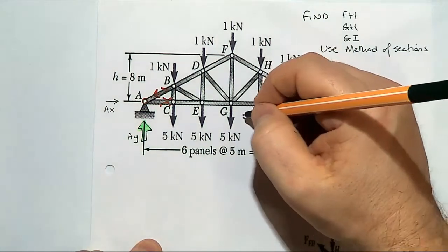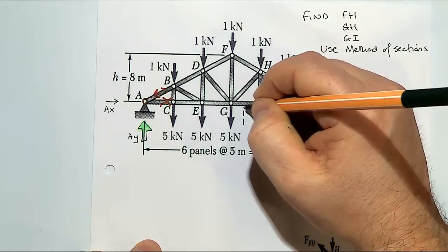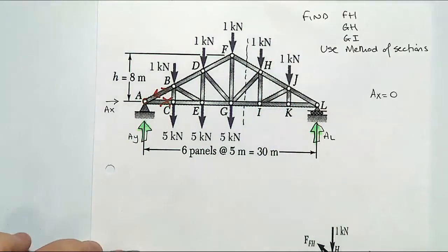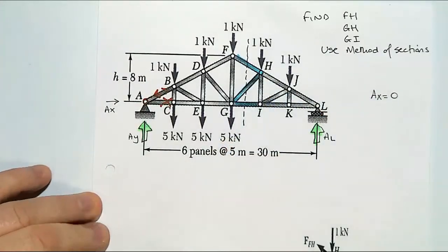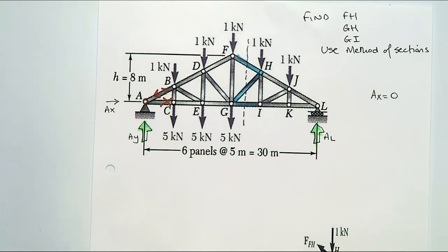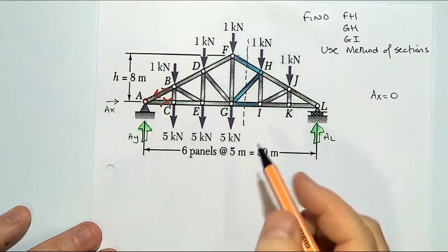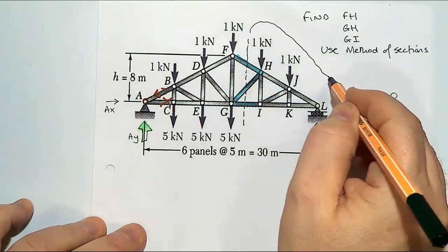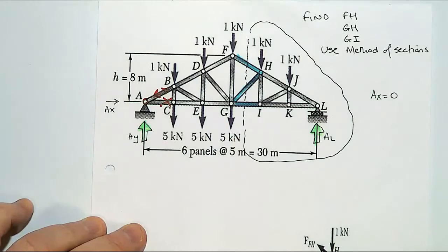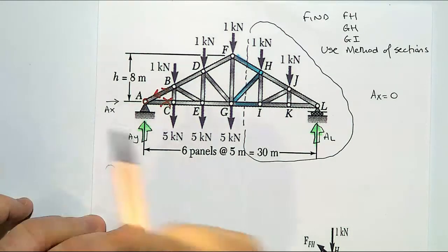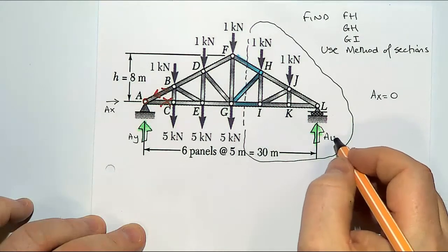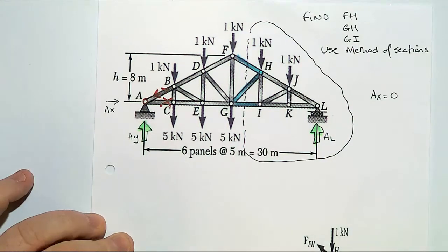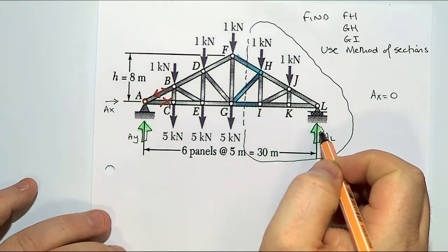What we're going to do is slice through those three members and look at the right-hand side when we come to do our calculations. Therefore I need to know AL. So like the method of joints, you need to know all of the external forces first, so I'll need to know what AL is.